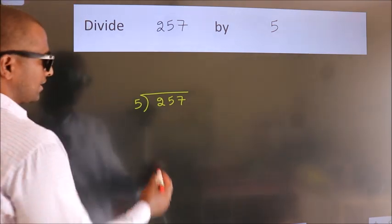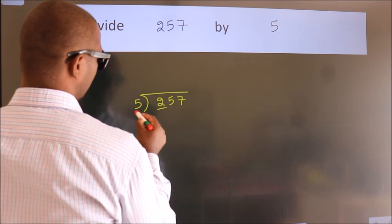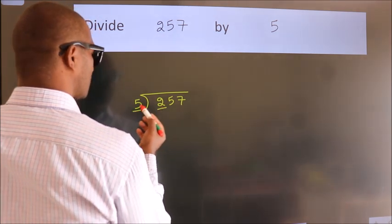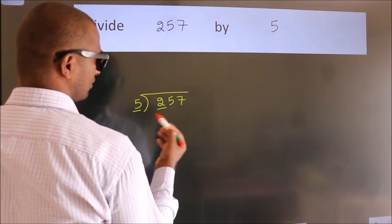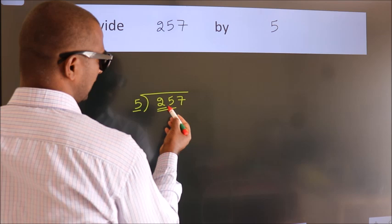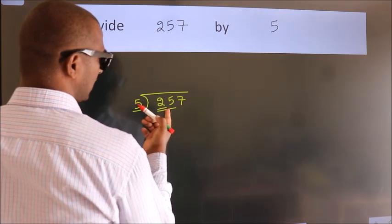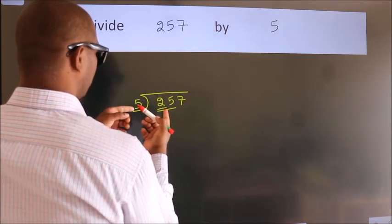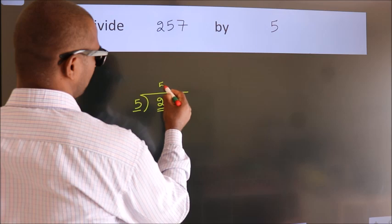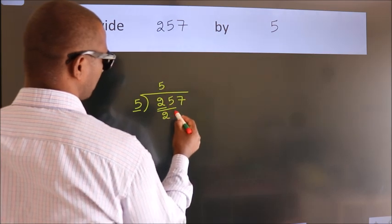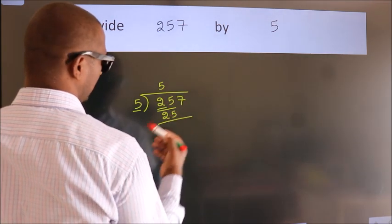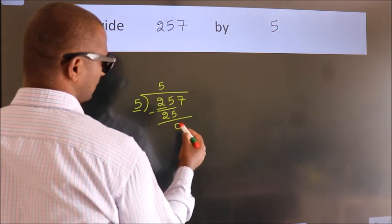Next. Here we have 2, here 5. 2 smaller than 5. So, we should take 2 numbers. 25. When do we get 25? In 5 table. 5 fives, 25. Now, we should subtract. We get 0.